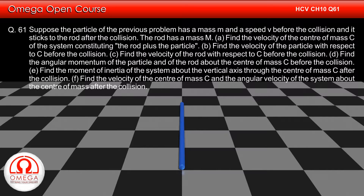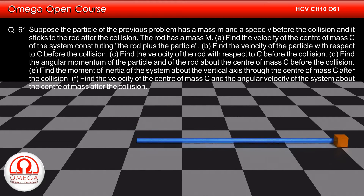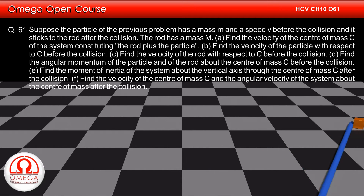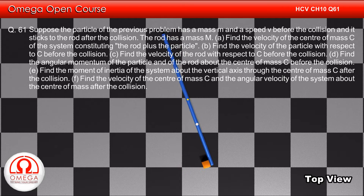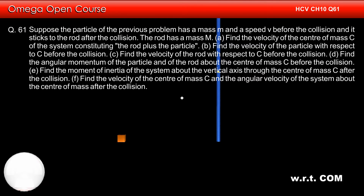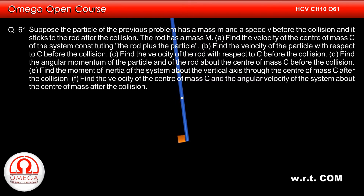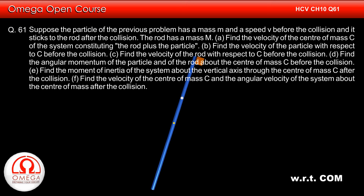Question 61: Suppose the particle of the previous problem has mass m and speed v before the collision and it sticks to the rod after the collision. The rod has mass M. Find: A) the velocity of the centre of mass C of the system (rod plus particle), B) the velocity of the particle with respect to C before the collision, C) the velocity of the rod with respect to C before the collision, D) the angular momentum of the particle and the rod about C before the collision, E) the moment of inertia of the system about the vertical axis through C after the collision, and F) the velocity of the centre of mass C and the angular velocity of the system about the centre of mass after the collision.